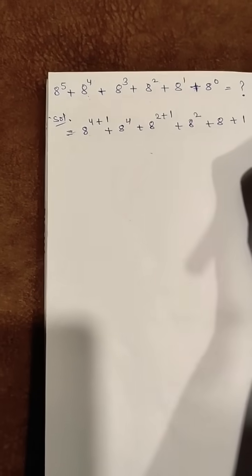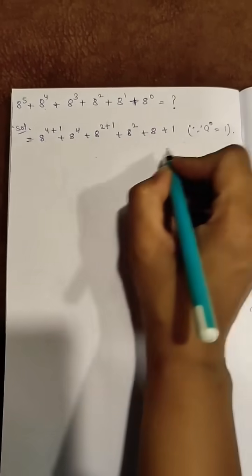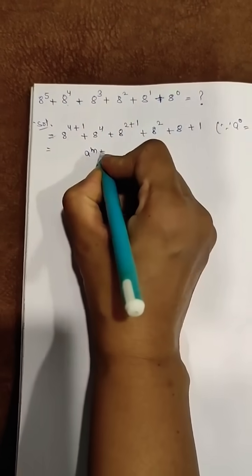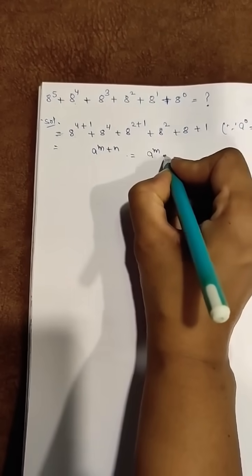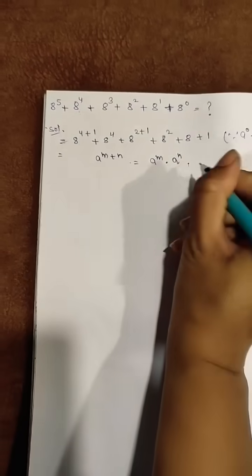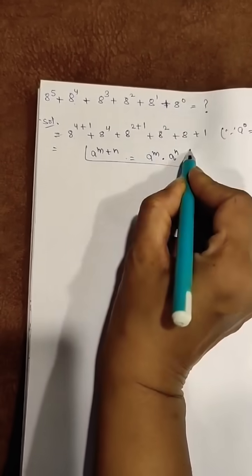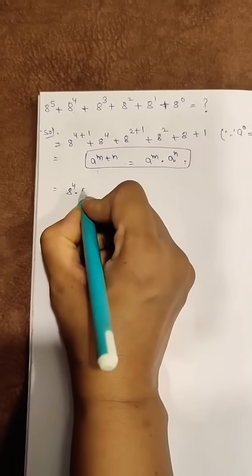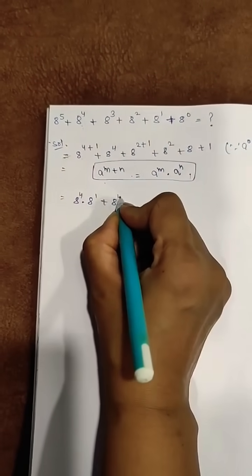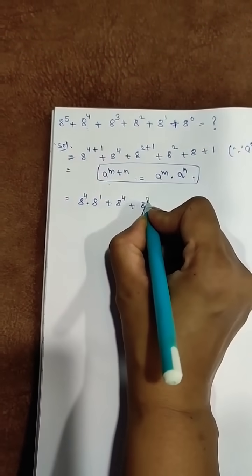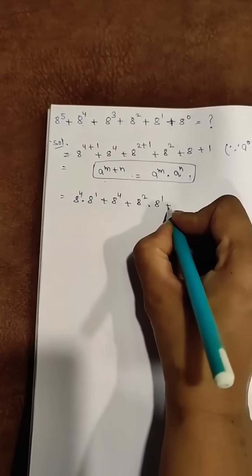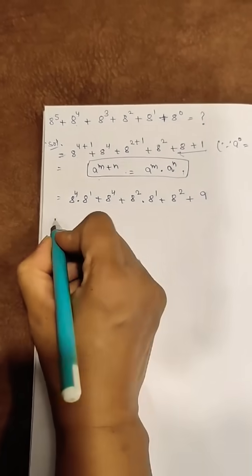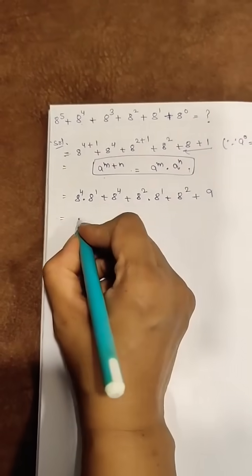We can write a raised to the power 0 as 1. Now, a raised to the power m plus n can be written as a raised to the power m into a raised to the power n. So we can write it like this: 8 raised to the power 4 into 8 raised to the power 1, plus 8 raised to the power 4, plus 8 raised to the power 2 into 8 raised to the power 1, plus 8 raised to the power 2, plus 8 plus 1, which is 9.